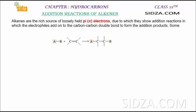In alkenes, we know there is a carbon-carbon double bond, and in a double bond there is a sigma and a pi bond. Pi electrons are loosely held electrons, whereas sigma electrons are strongly bound electrons. So pi bond can easily be broken down, whereas sigma bond is a stronger bond. It is due to the pi electrons that the alkenes are more reactive than alkanes.